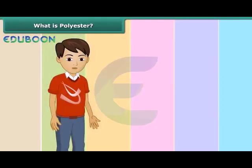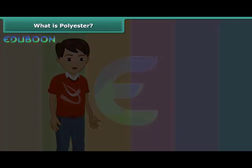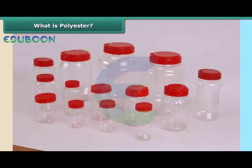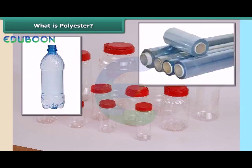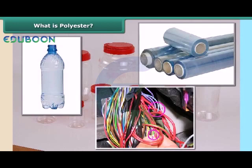PET is a familiar form of polyester. You may have noticed PET jars used for storing rice, sugar, etc. PET is used for making bottles, jars, films, wires, and more.